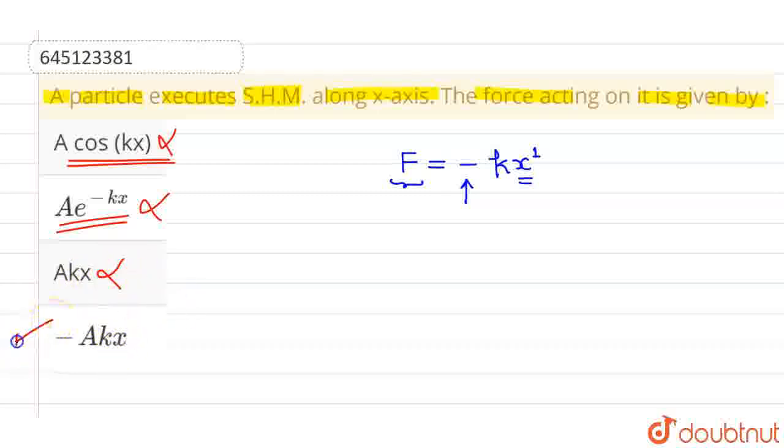So the only force is option 4. Option 4 is correct because it is similar to minus kx, since A times k is a constant times displacement with a negative sign, as required for the force in simple harmonic motion. So option 4 is correct.